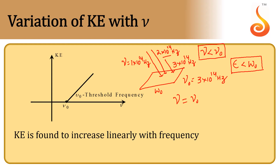If the incident light frequency is also 3×10¹⁴ Hz, then what happens? According to the formula given by Einstein for the photoelectric effect, the energy of the light is equal to the work function of the metal plus the kinetic energy of the electrons. Here, energy of light is hν and work function is hν₀ plus kinetic energy. Since ν is equal to ν₀, we get hν₀ = hν₀ + kinetic energy.